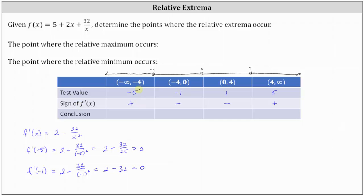Because the first derivative is positive over the first subinterval, the function is increasing. In the second subinterval, the first derivative is negative, so the function is decreasing. In the third subinterval, the first derivative is still negative, so the function is still decreasing. On the last subinterval, the first derivative is positive, and therefore the function is increasing.